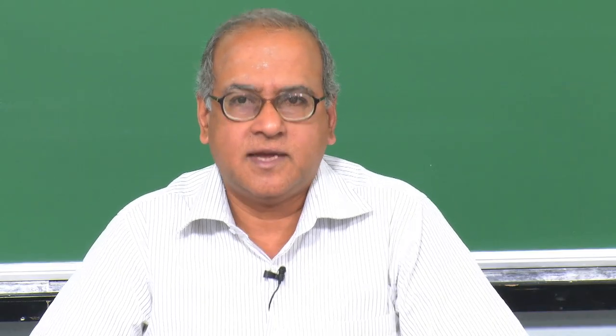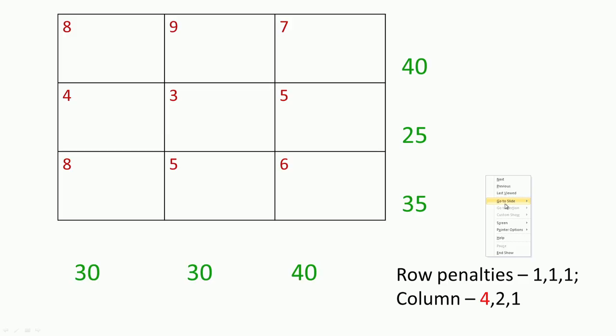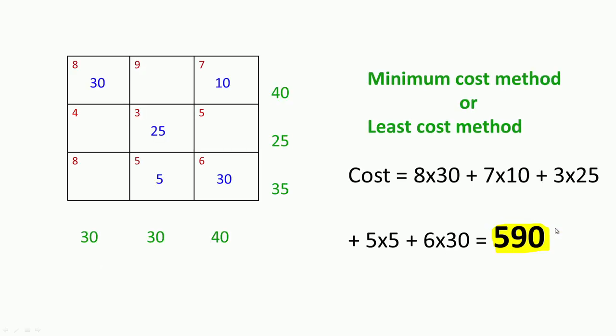In this class, we will see another method that gives us a good starting solution. So far we have seen two methods: the northwest corner rule and the least cost method or minimum cost method. The northwest corner rule gave us a solution with cost equal to 625. The minimum cost method gave us a solution with cost equal to 590.